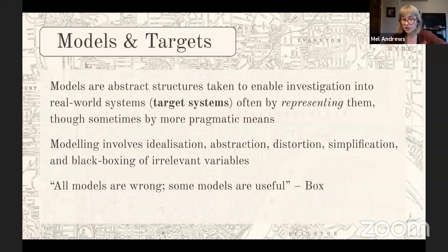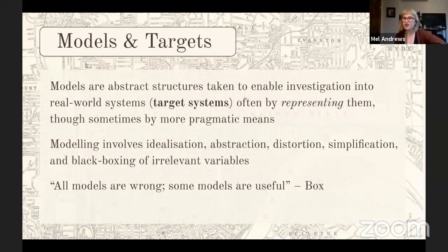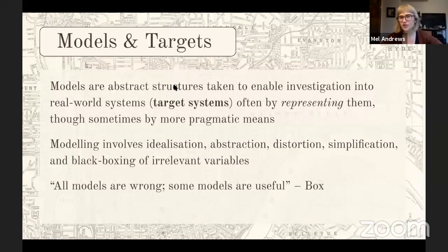Modeling necessarily involves idealization, abstraction, distortion, simplification, coarse-graining, and black-boxing of irrelevant variables. The famous quote representative of how philosophy of science takes models to be useful comes from statistician George Box: 'All models are wrong, some models are useful.' This is a very Wimsattian position — his famous paper on this is 'False Models as Means to Truer Theories.'